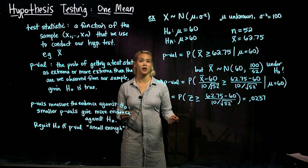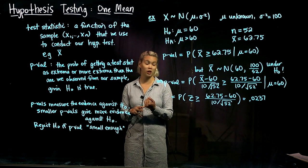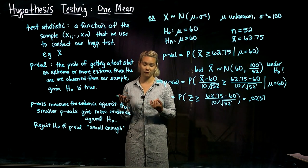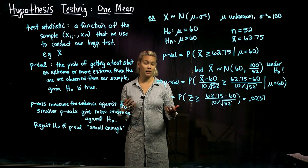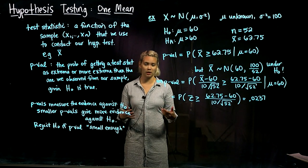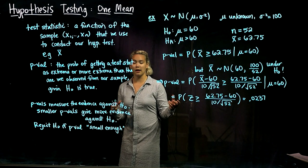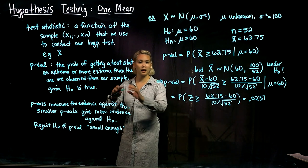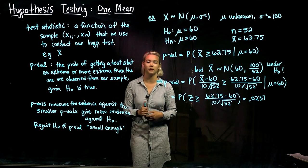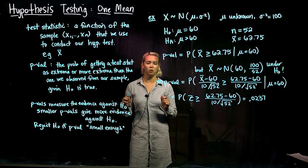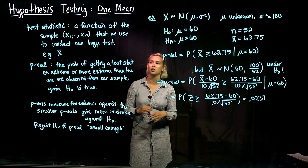In previous videos we've talked about hypothesis testing and how it ends up where we either reject the null hypothesis in favor of the alternative, or we don't reject the null hypothesis. So how do we decide whether or not to reject the null hypothesis? We have some decision rule that says if blank, then we reject the null; if blank, do not reject the null. We're going to talk in more detail about that decision rule.